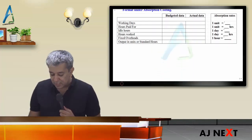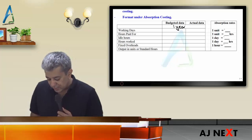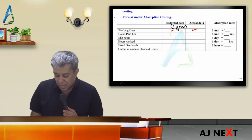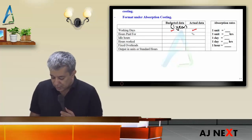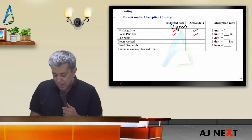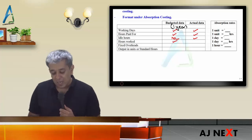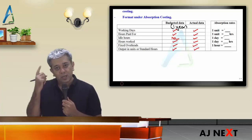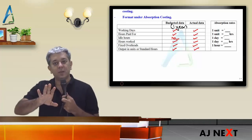If you are doing absorption costing, what is the maximum data you need? Suppose the question is for one year — standard/budgetary data for one year, actual data for one year: how many hours should have come, how many hours came, idle time (standard idle hours are always zero), how many days the factory should have opened, how many days it opened, how many hours should have been worked, how many were worked, fixed overheads expenditure budgeted vs. actual, and output — how many units should have been produced vs. actually produced. Output can be expressed either in units or in standard hours — your choice, though units is usually better.